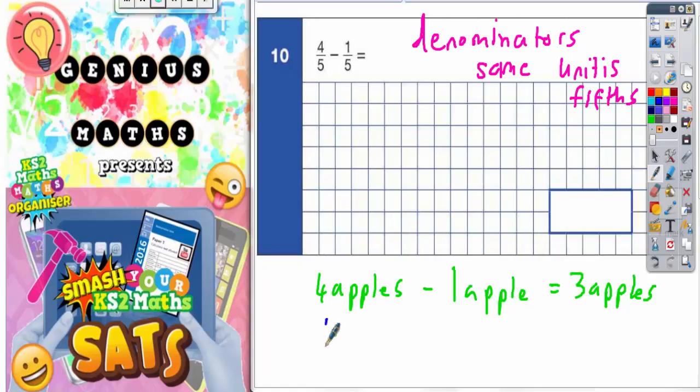If you had four sausages and took off one sausage, the unit there is sausages. So you would have three sausages left. But we're not dealing with apples and sausages. We're dealing with fifths.